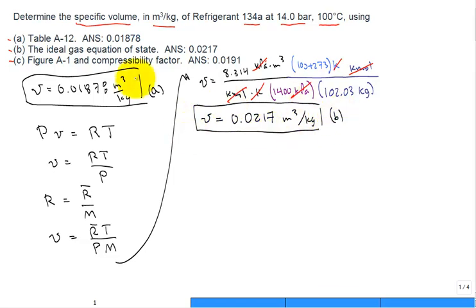Now for part C, use the compressibility factor Z and figure, not table, but figure, figure A1. So what is the compressibility factor? Well, it's the way we modify the ideal gas equation. So instead of just having PV is equal to RT, the compressibility factor Z adjusts so that this equation is correct. And you just have to look up what Z is off of table A1.